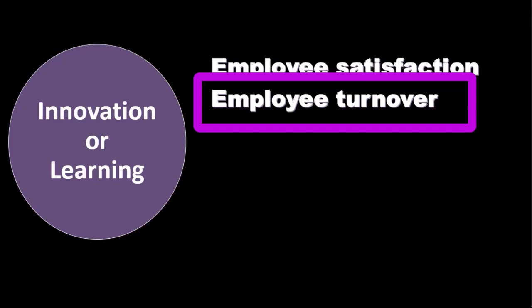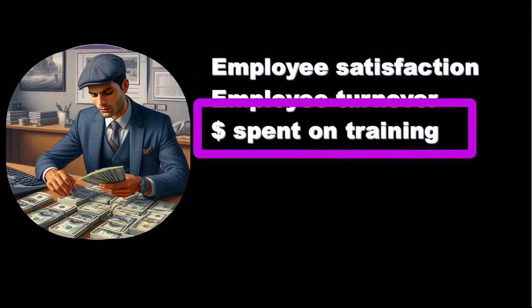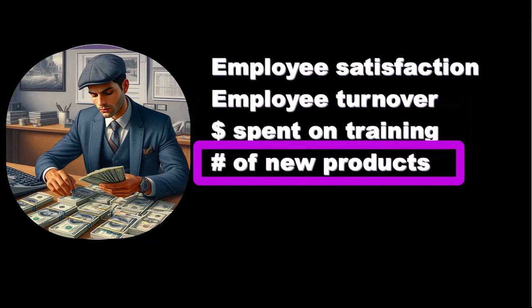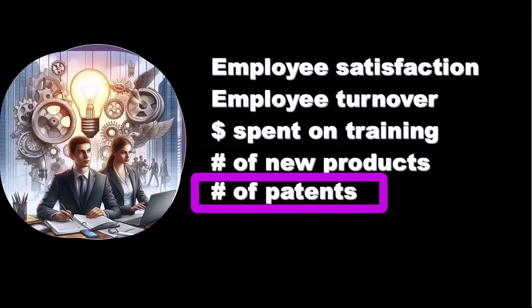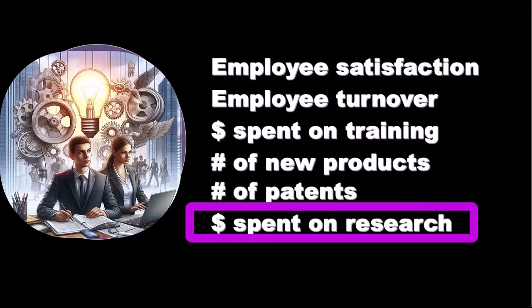We can look at turnover rates to quantify that. Dollars spent on training is another measure — how long does it take to train, what are the training costs, are we spending time to make people happy within the training, and what does the training look like. Number of new products can be examined as an indication of innovation, along with number of patents and dollars spent on research.